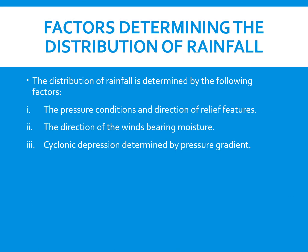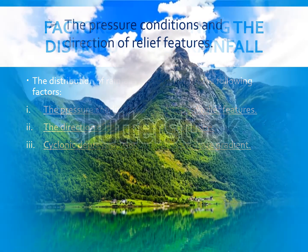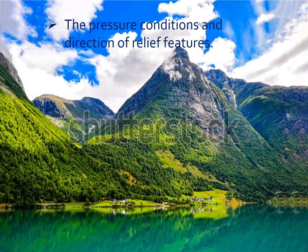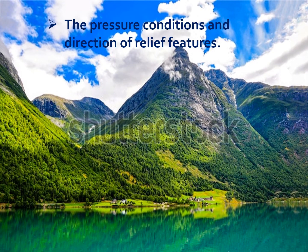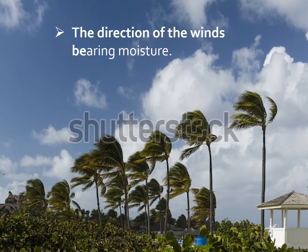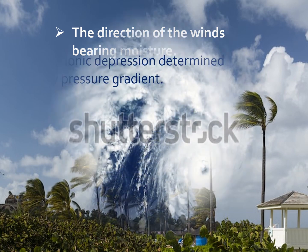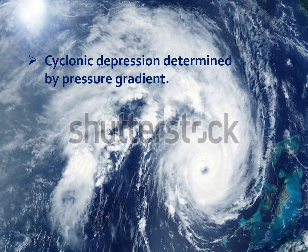The distribution of rainfall is determined by the following factors: the pressure conditions and direction of relief features, the direction of winds bearing moisture, and the cyclonic depression determined by pressure gradient. We have discussed all these factors in detail in our previous classes on climate of India. Let's have a look at these factors with pictorial support.